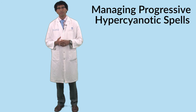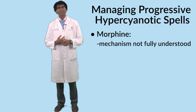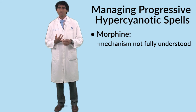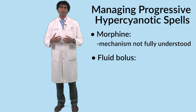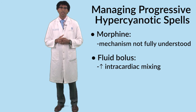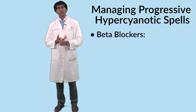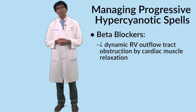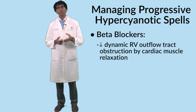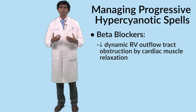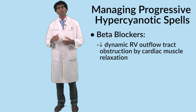With the knee-chest position, some of these spells can be terminated, but assuming the spell is progressive, other options include morphine. The exact mechanism by which morphine works is not fully understood, but a bolus of morphine along with a bolus of fluid can increase intracardiac mixing and improve saturations. Beta blockers are thought to decrease the dynamic obstruction to right ventricular outflow by causing muscle relaxation, and that can improve saturations by decreasing the magnitude of the right-to-left shunt.